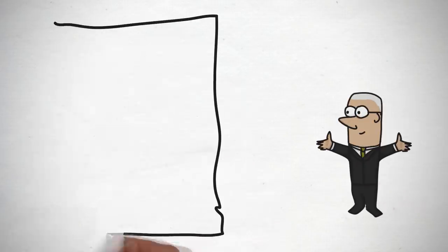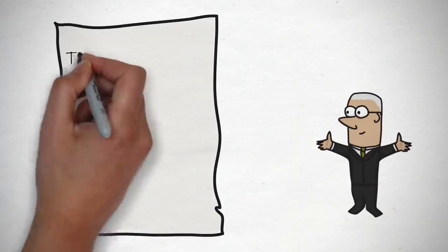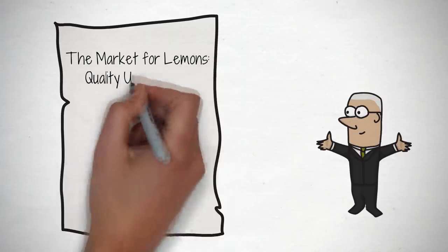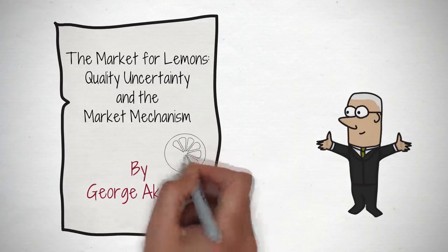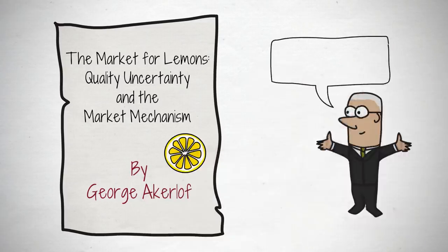In 1970, economist George Akerlof published a paper called The Market for Lemons, Quality Uncertainty and The Market Mechanism, in which he described an idea that would keep researchers busy for decades — adverse selection.